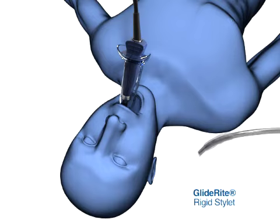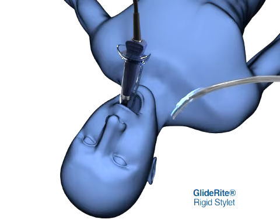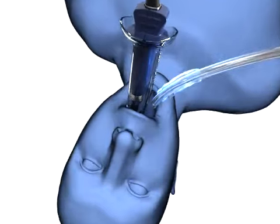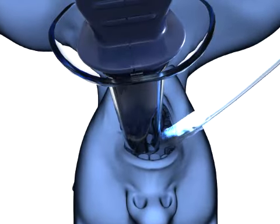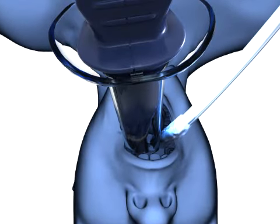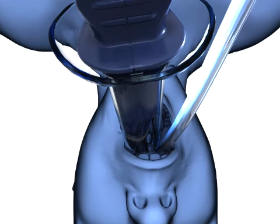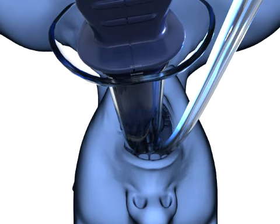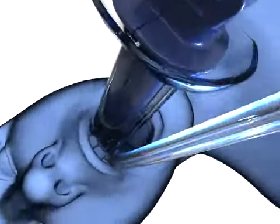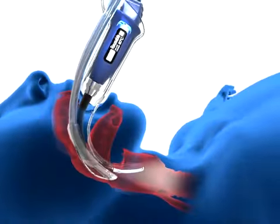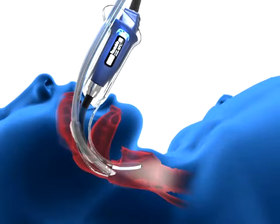The endotracheal tube, which in this case is shaped by a glide-right rigid stylet to complement the angle of the Glidescope Video Laryngoscope, is inserted under direct vision until the distal tip of the tube is very near the distal tip of the laryngoscope. This relationship is quickly and easily achieved, and only then should you return to looking at the video monitor.